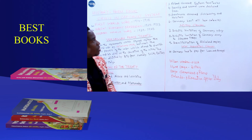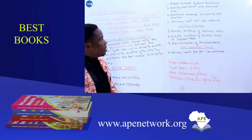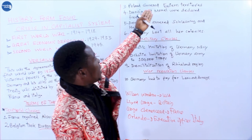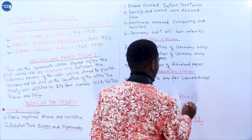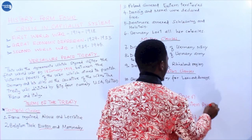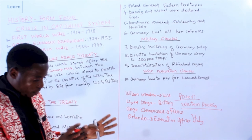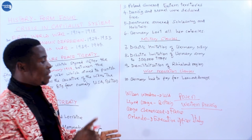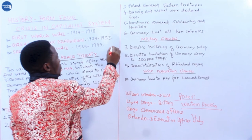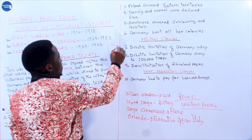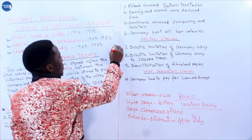Another territorial clause was about the area given to Poland. In the eastern part of Germany, there is Poland. Poland annexed the eastern territories, which included Posen and western Prussia. Posen and western Prussia, being provinces near Poland, were taken by Poland. This made eastern Prussia isolated, because in between — here is Germany, here is Prussia — eastern Prussia and western Prussia were now separated by Polish territory.